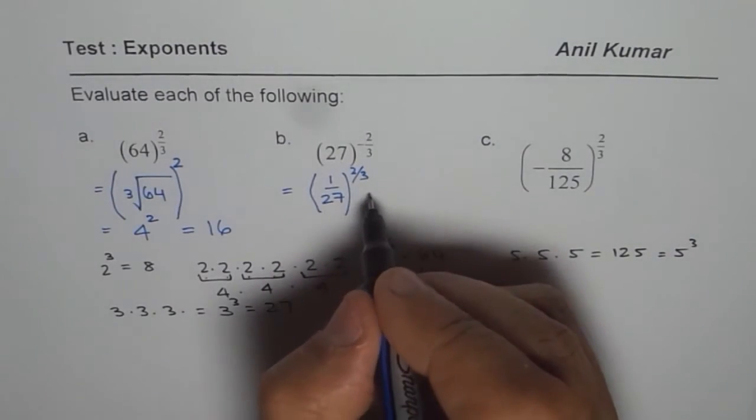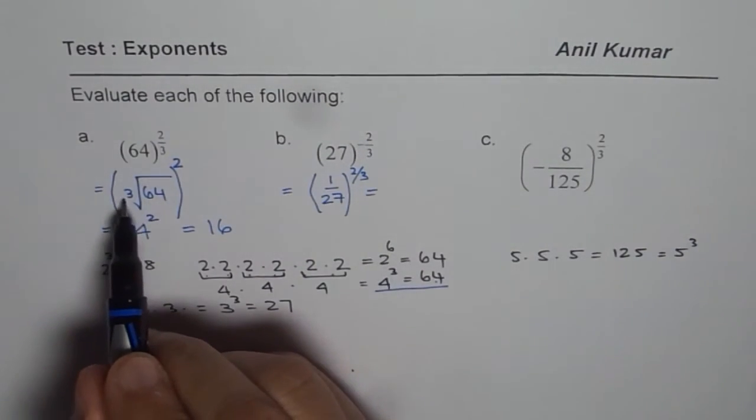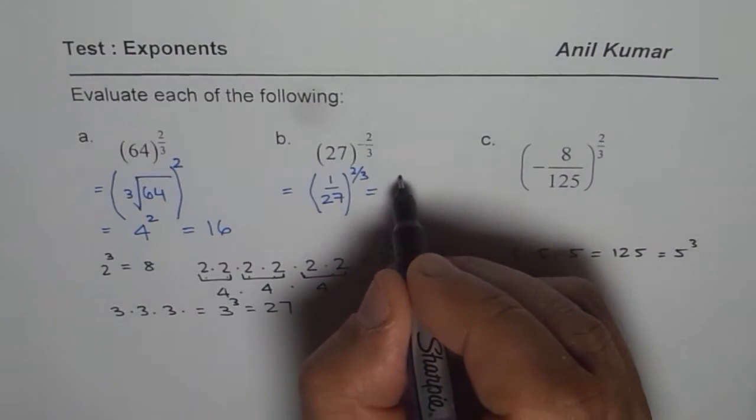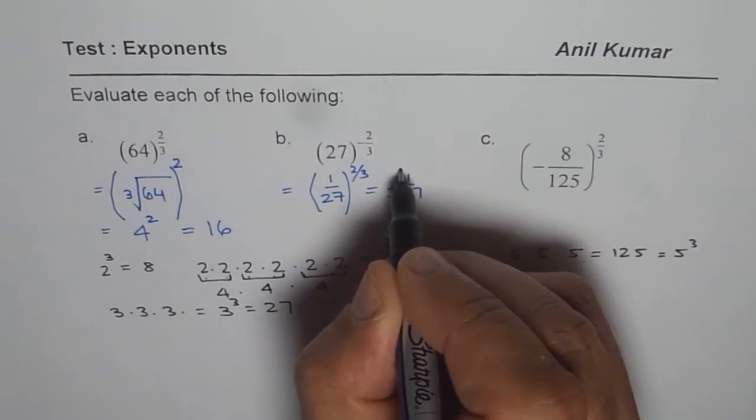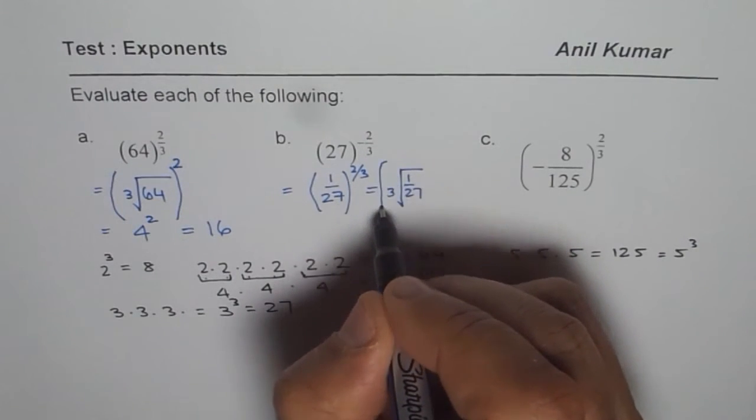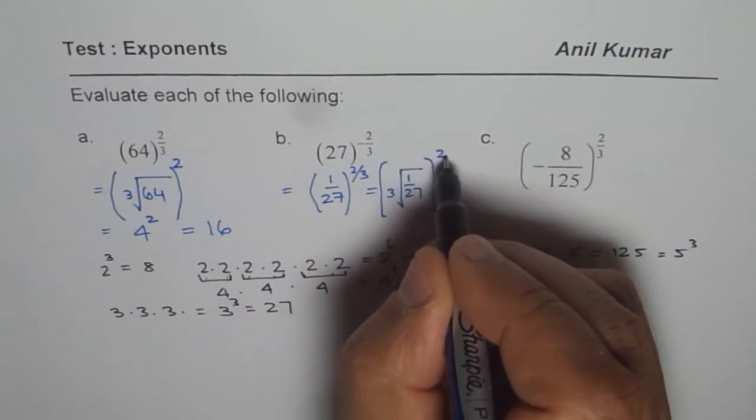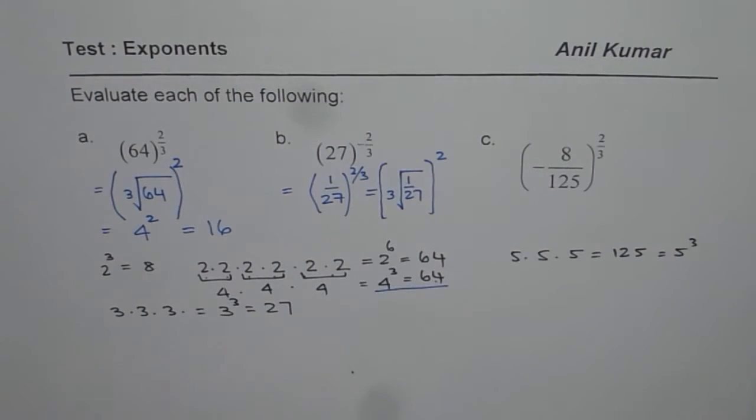The second step here will be, as we did before, take care of the cube root. What we have here is cube root of 1 over 27, and then all this is squared. This is how you should be looking at the question.